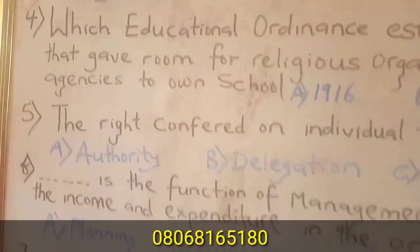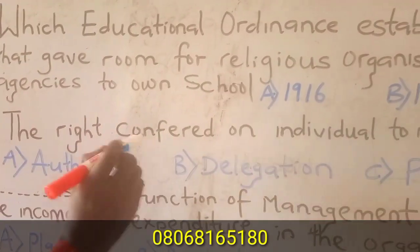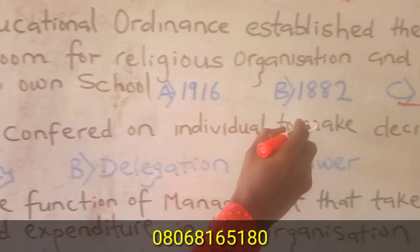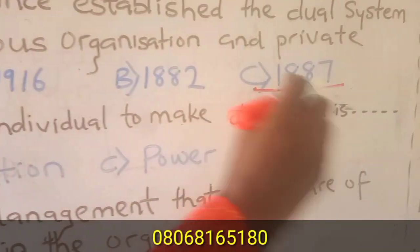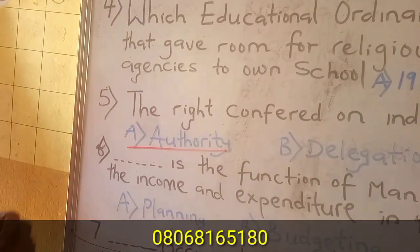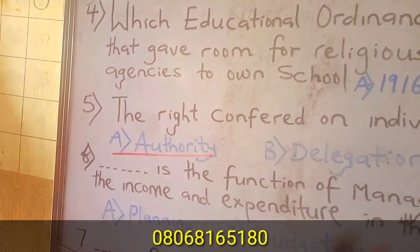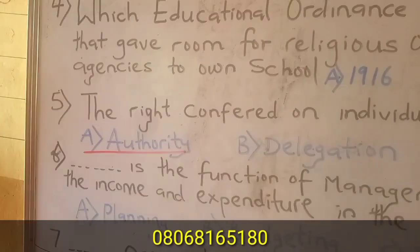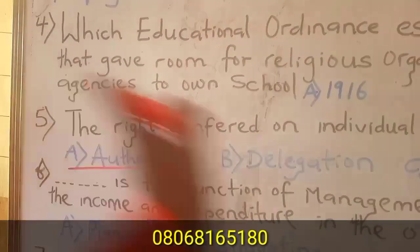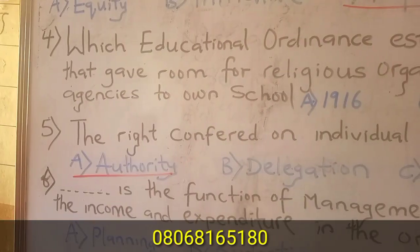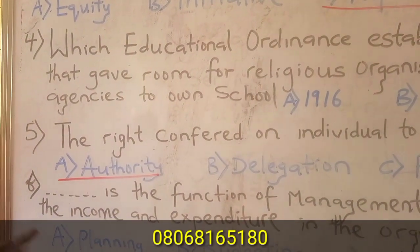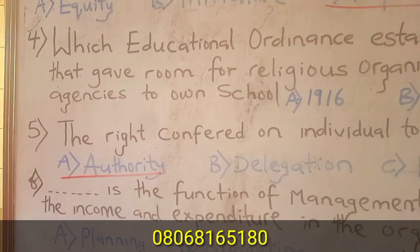Question five: The right conferred on an individual to make decisions is called authority. Authority is the right given to someone to make decisions. For example, pastors and leaders have the right to make decisions and people will follow. It is called authority.